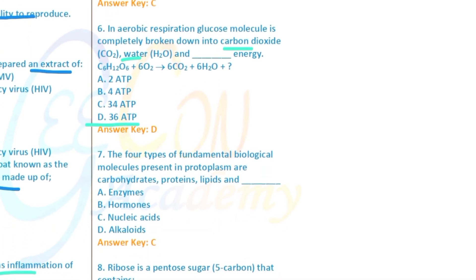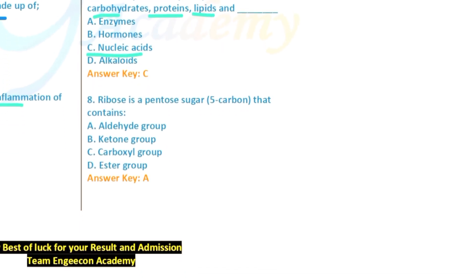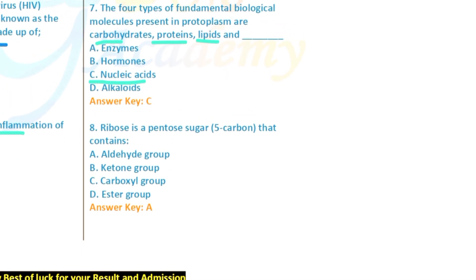In aerobic respiration, a glucose molecule is broken down producing 36 ATP molecules. Question: The four main fundamental biological molecules present in the cytoplasm include proteins, lipids, and nucleic acids — option C, nucleic acid, is ticked.